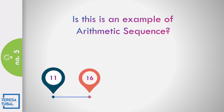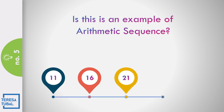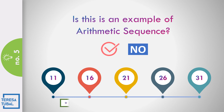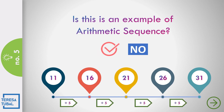Question number five: In the sequence 11, 16, 21, 26, and 31 — is this an example of arithmetic sequence? Any idea? Correct. The answer is yes, because the common difference is equal to 5.